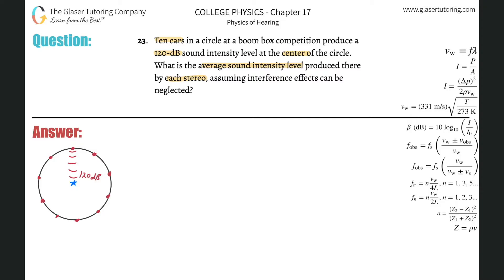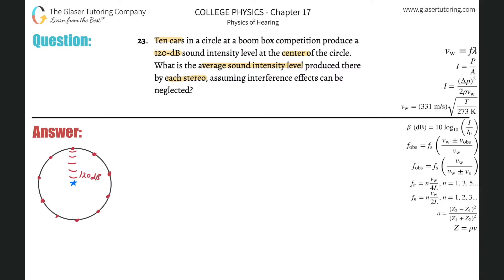Problem 22 is very similar to this. Here I have 10 cars in red around a circle, and they say that at the middle the total decibel level is going to be 120 decibels. Each car — I only showed one of them — but each car would be producing the same sound wave basically.